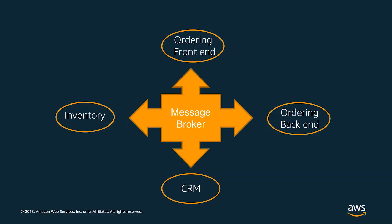Message brokers allow different software systems, often using different programming languages and on different platforms, to communicate and exchange information. Messaging is the communications backbone that connects and integrates the components of almost all distributed applications. For example, when you place an order on Amazon.com, the web app uses messaging to send instructions to the order processing and fulfillment systems.